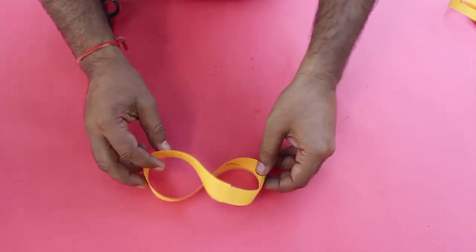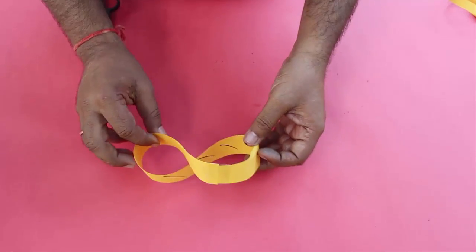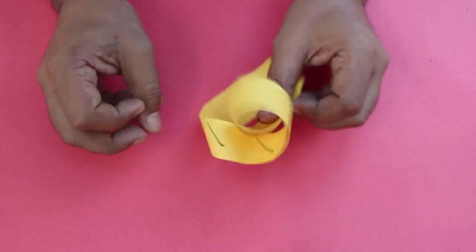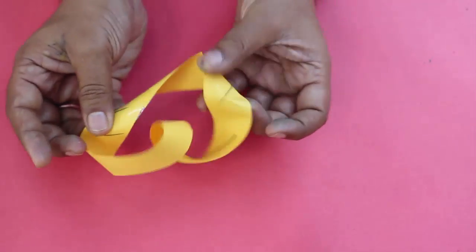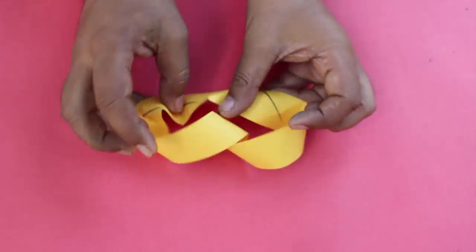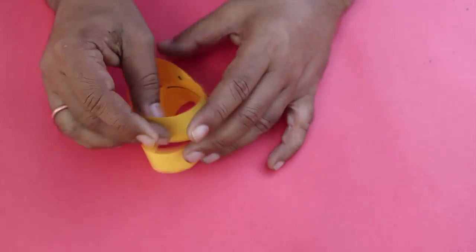While this looks like a figure of 8, if we turn it, this becomes a twisted circle. You can see this is a circle that goes round and round and comes back and joins the end.